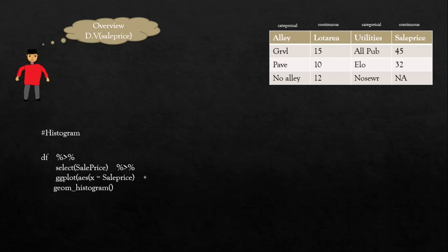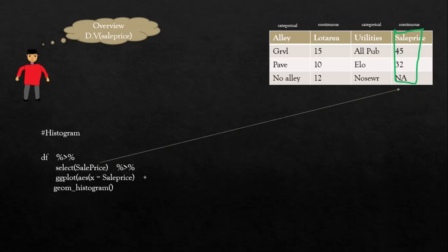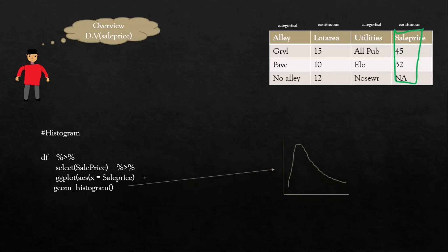To visualize the dependent variable, we make a histogram. When you run this command, it selects the sale price column and plots a histogram. This also discusses what a skewed distribution means. Similarly, it works on categorical data — you can visualize it the same way.